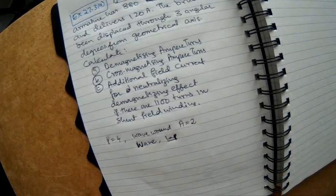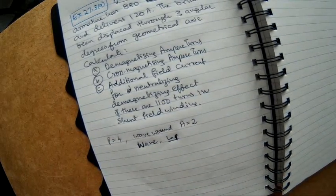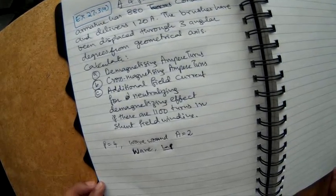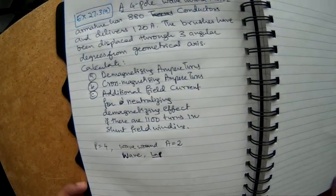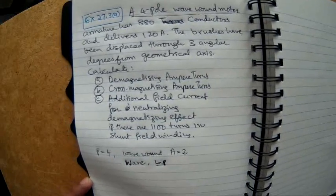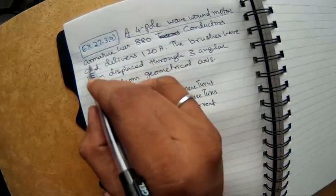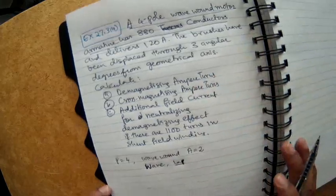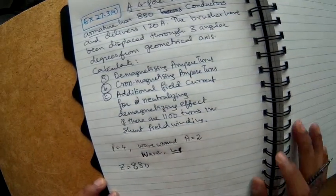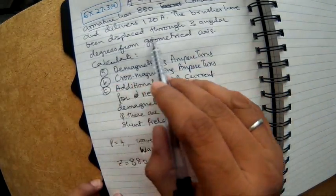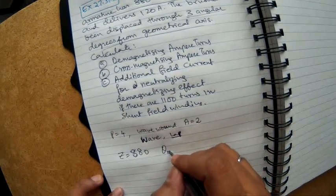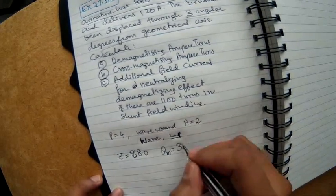But then if you want to really understand what is wave winding, what is lap winding, it is quite an involved topic about how to wind the armature of a machine. So whenever we have time we might look at it in a different video. Alright, let's come back here. It has armature 880 conductors, so Z equal to 880. The brushes have been displaced through 3 angular degrees from geometry, so theta m equal to 3 degrees.